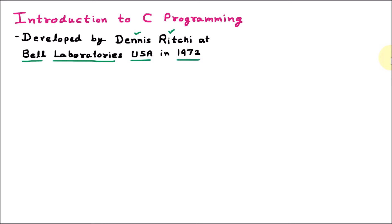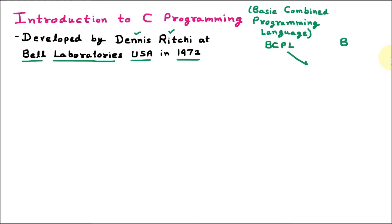C is the combination of two programming languages. The first is BCPL, which stands for Basic Combined Programming Language, and the second language is B. C was derived from these two languages, BCPL and B.